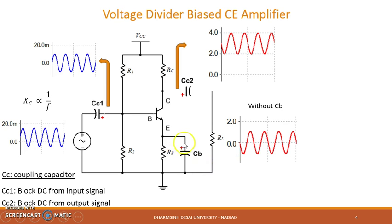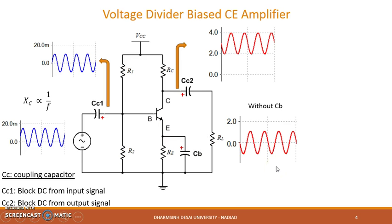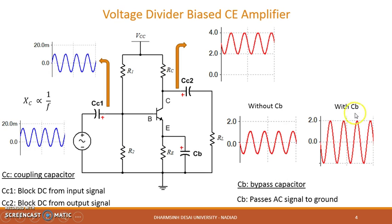One more capacitor CB is connected across RE. If CB is not present, then the output AC signal will pass through the emitter resistor and feed back to the input, resulting in a decrease in the overall output. On the other hand, if CB is present, the output AC signal will pass through CB, which provides a low-resistance path to the AC signal, and it will be directly grounded. So the AC signal is not fed back to the input, and we get increased output. Since CB helps in bypassing the emitter resistance, it is called a bypass capacitor.